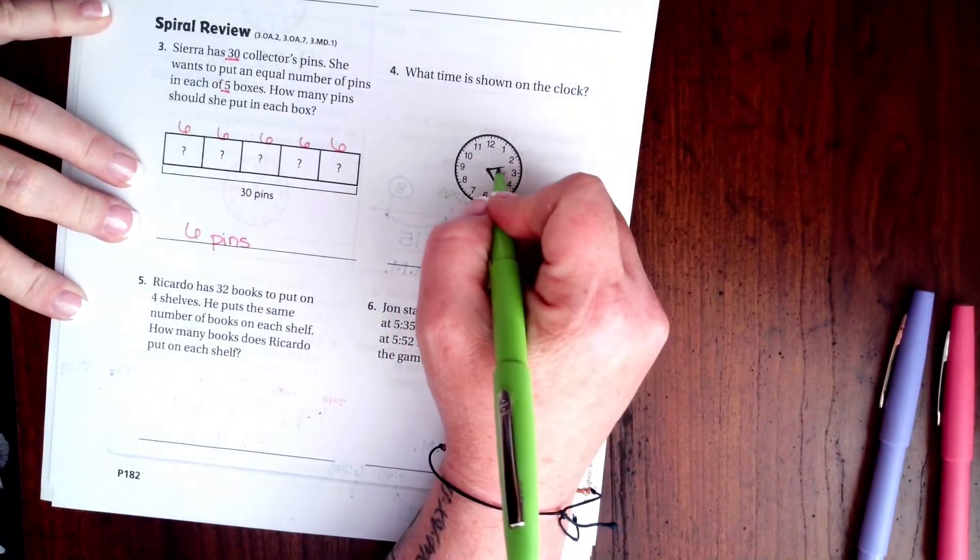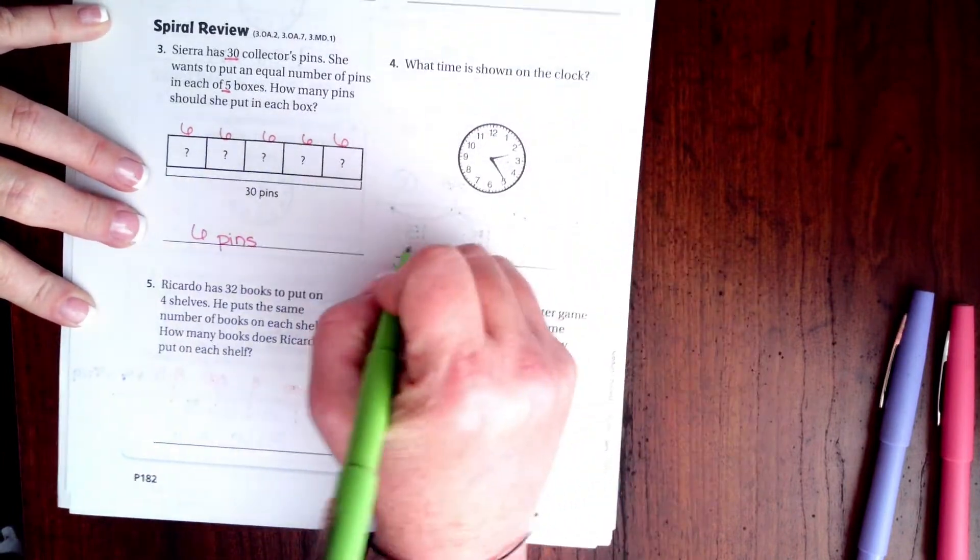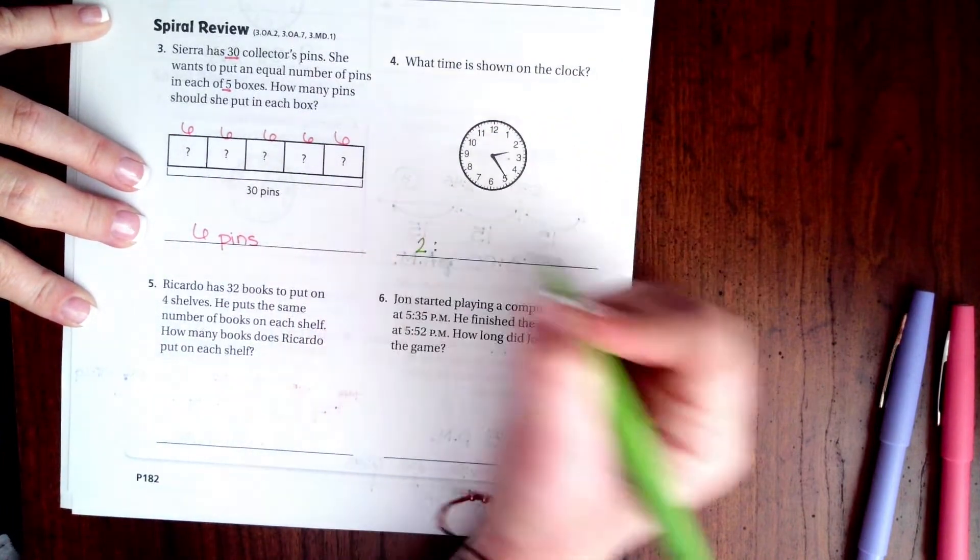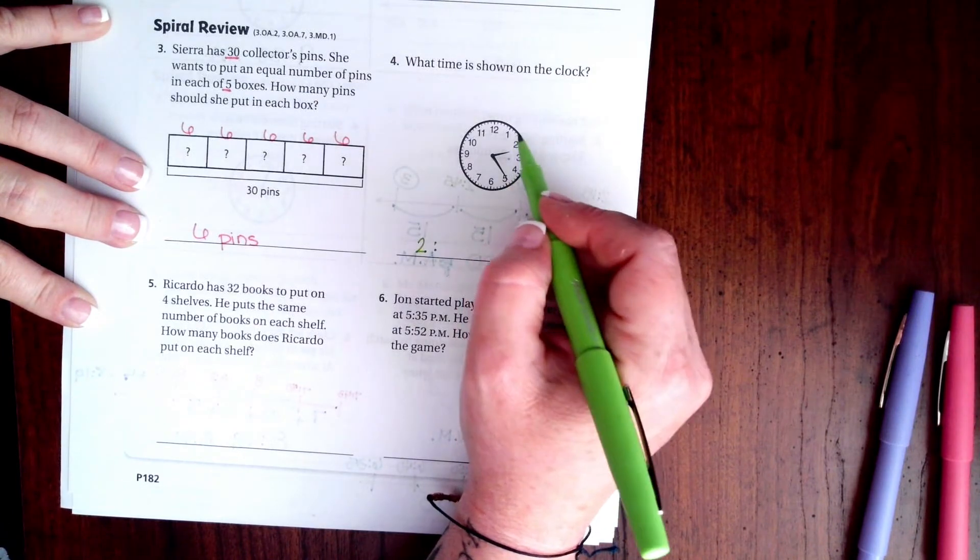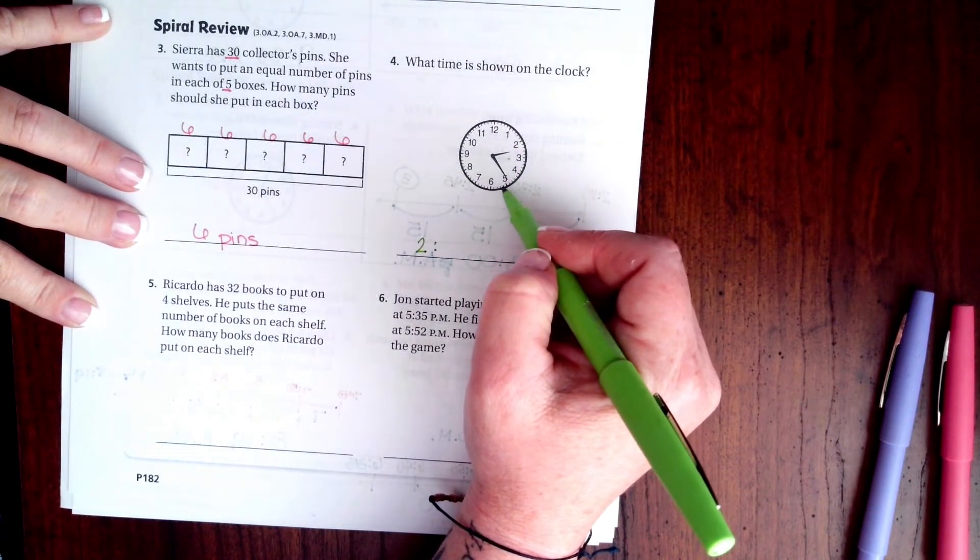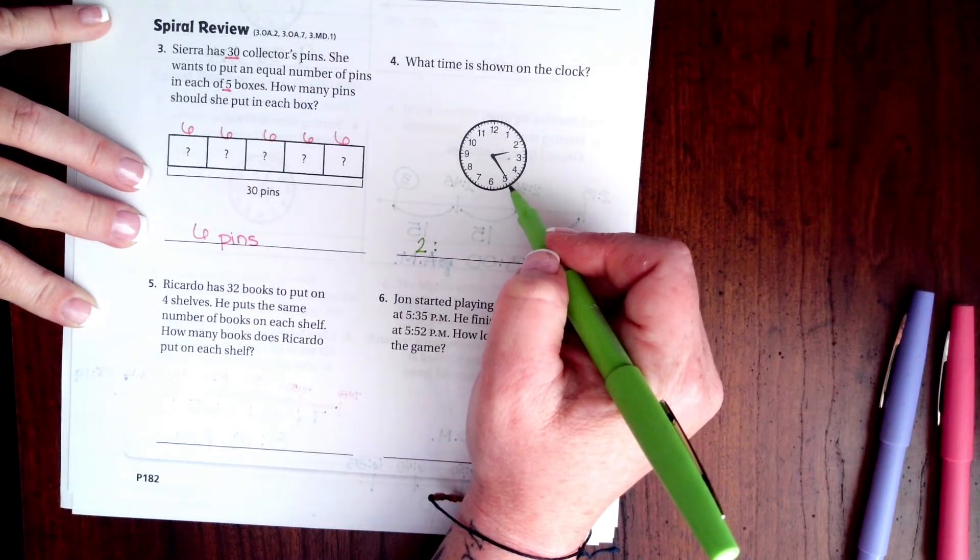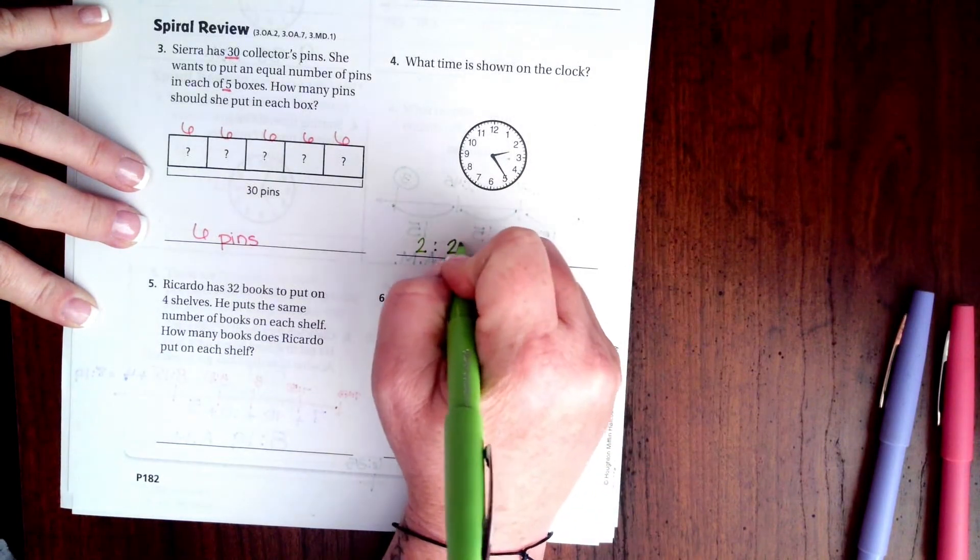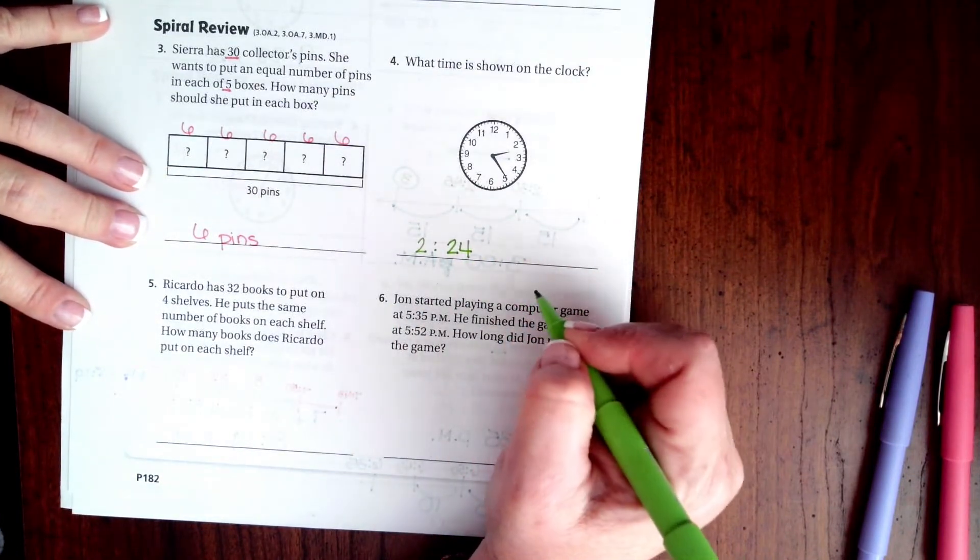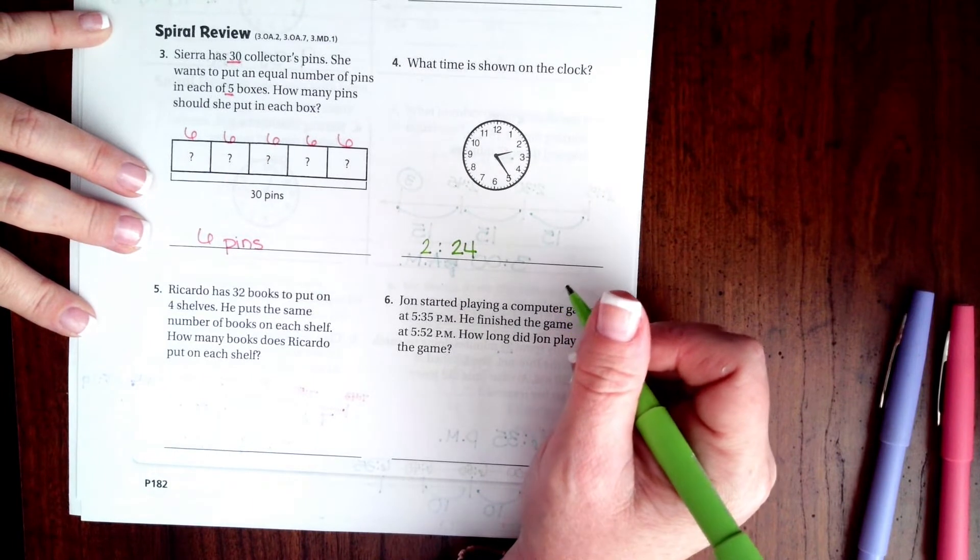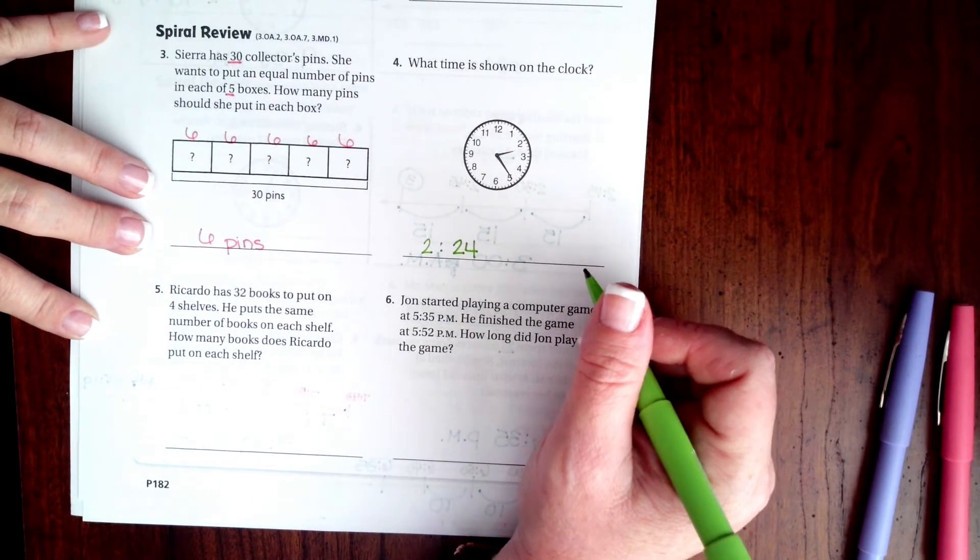What is the time shown on the clock? Well, the short hand, the hour hand is past the 2. So, that's going to be 2. It hasn't hit the 3 yet. And we're going to go 5, 10, 15, 20. And it's not quite to 25 yet. So, I'm going to put 24 because it's pointing at the one right before that. Now, we don't know if it's AM or PM because the clock goes around twice a day. One for AM and one for PM. So, it's just going to be 2:24.